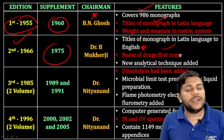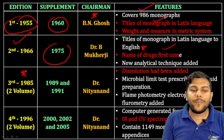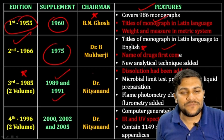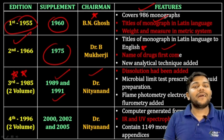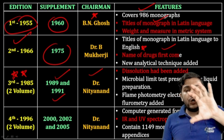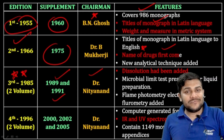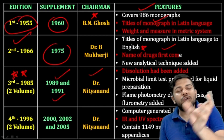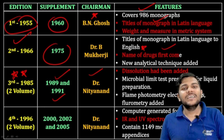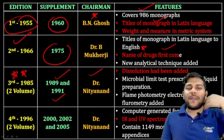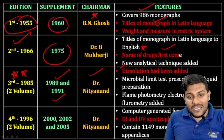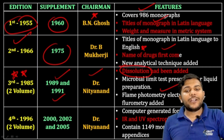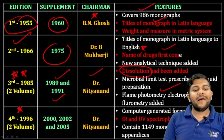About twenty years later came the third pharmacopoeia in 1985, supplemented in 1989 and 1991 under Dr. Nithyanand. The third edition contains two volumes. Dissolution apparatus was added in this third edition, along with flame photometry, electrophoresis, and fluorometry.